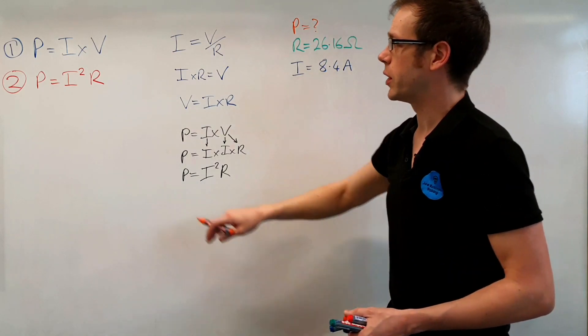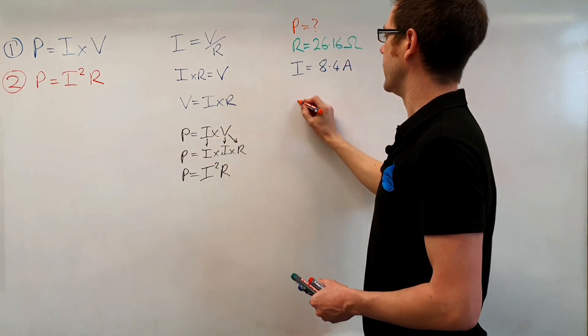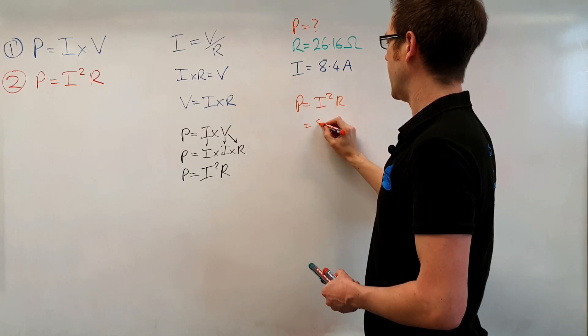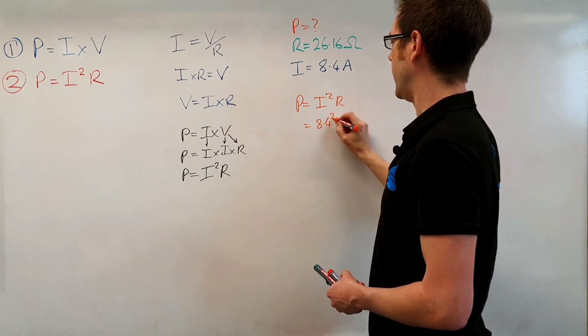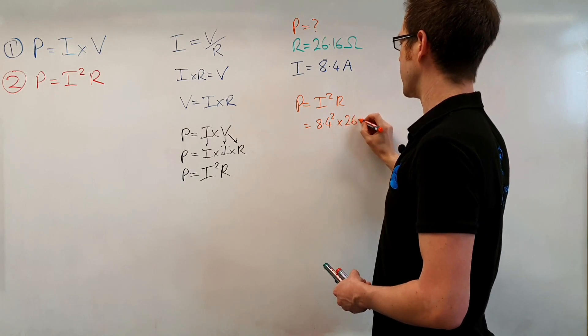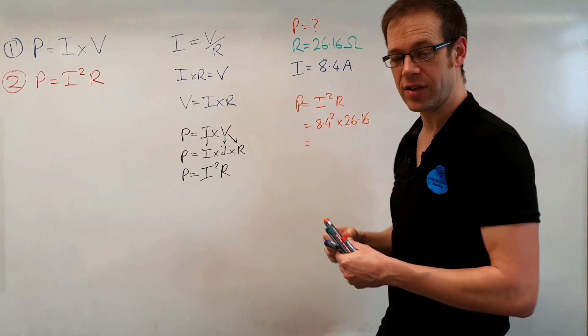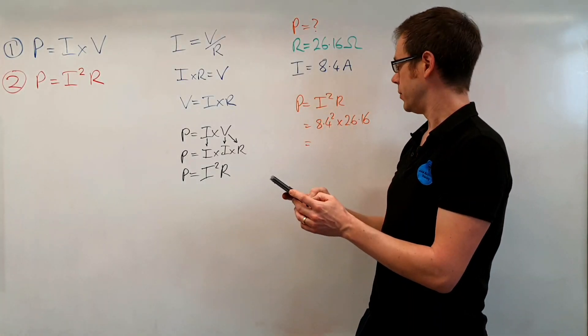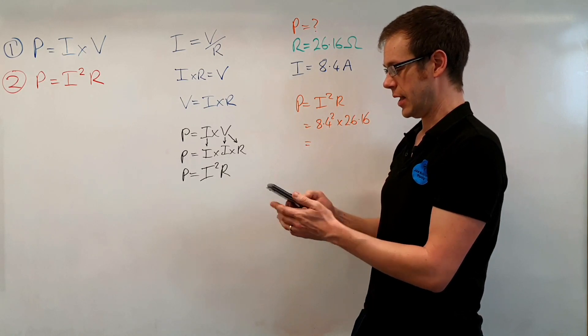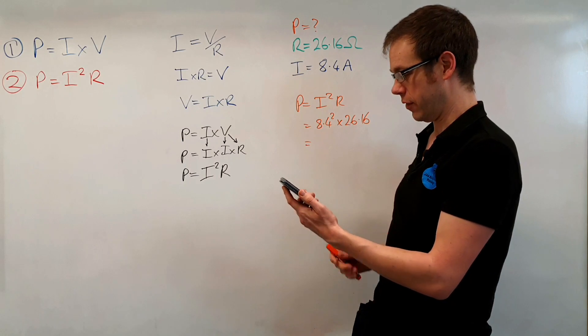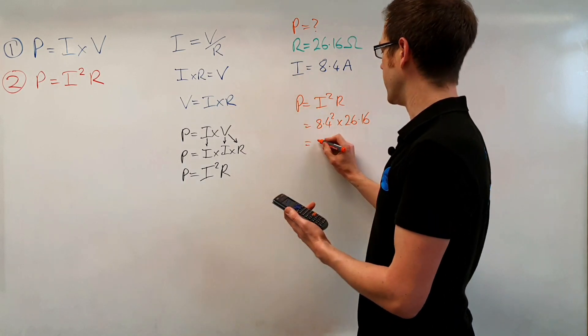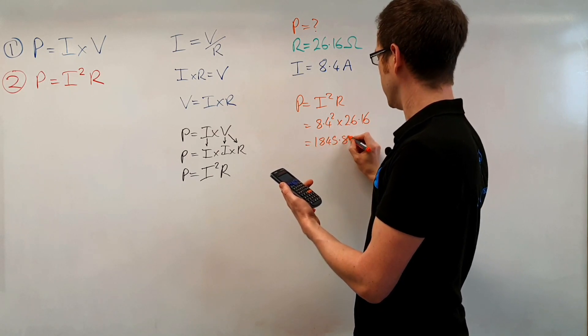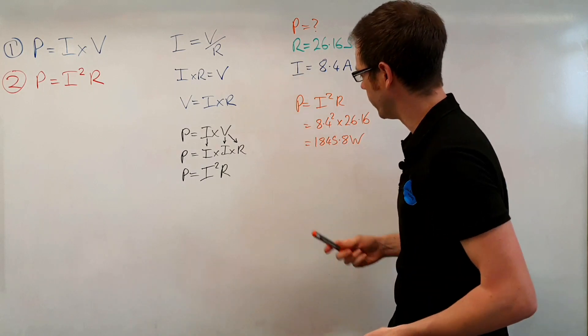So in order to calculate this we're going to use our second power formula. So we're going to say that P is equal to I squared R. So that means that we're going to do 8.4 squared and then we're going to times it by 26.16. So if we put that into our calculator now we're going to go 8.4 squared multiplied by 26.16 and that's giving us a total power of 1845.8 watts. Okay so we've got 1845.8 watts.